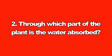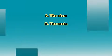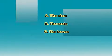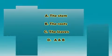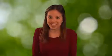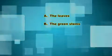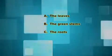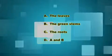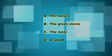Question two: through which part of the plant is water absorbed? A) the stem, B) the roots, C) the leaves, D) A and B. The answer is B — the roots are the part of the plant by which water is absorbed. Question three: in what part of the plant is light energy from the sun used in photosynthesis? A) the leaves, B) the green stems, C) the roots, D) A and B. The correct answer is D — A and B. The leaves and green stems are the parts of the plant where photosynthesis occurs.